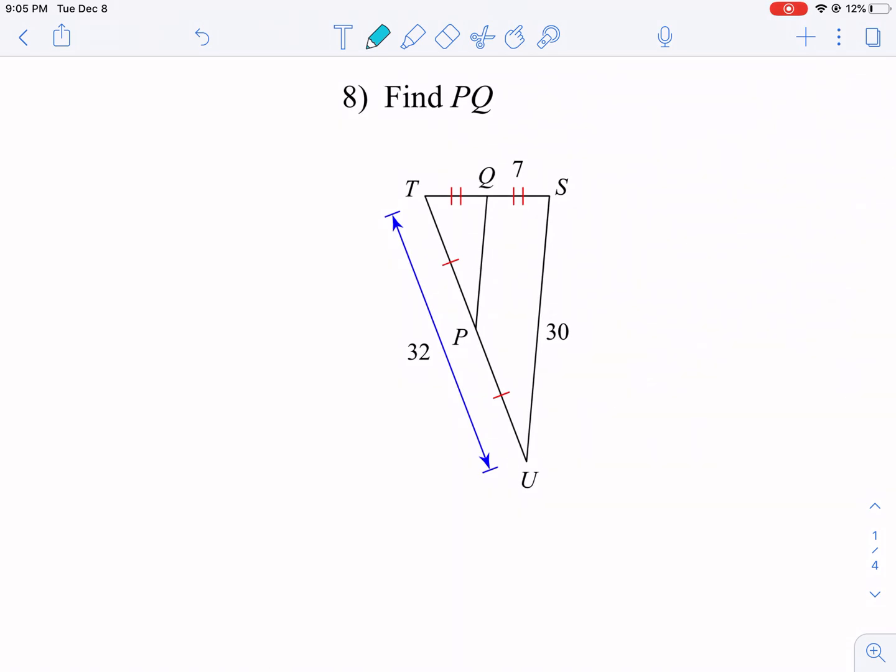And now we got something a little bit more complicated. We're looking for PQ. It's just trying to give us more information. We don't need that, because that's not the side parallel to it. We're looking for this right here. So it's going to be half of this guy, so it's going to be 15 units.